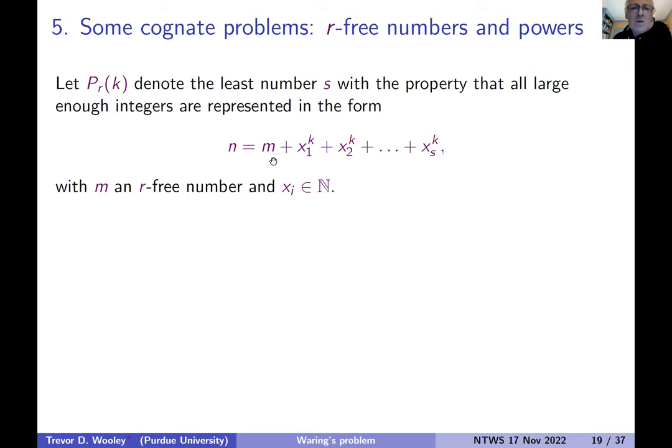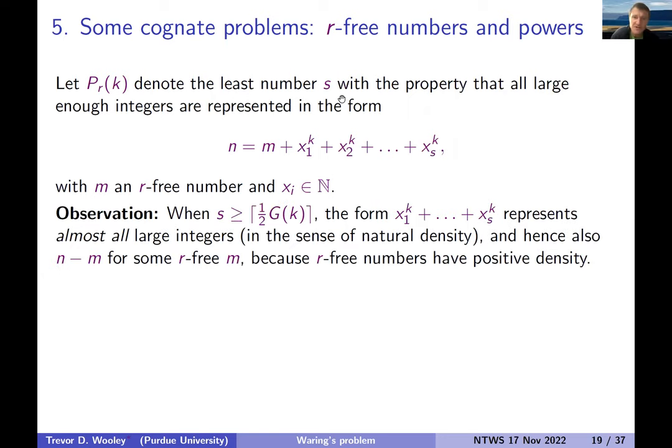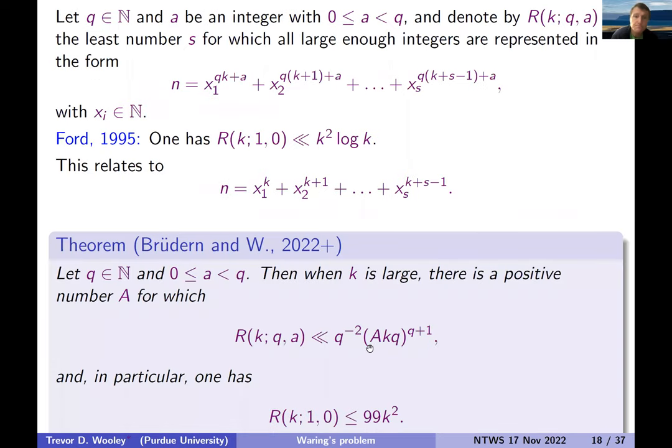Another cognate problem. What if you look at sums of an r-free number and a number of k powers? So maybe the simplest version of this is if you look at a square-free number plus a number of k powers. So square-free numbers have positive density. And so this gives one problems, but one ought to be able to get a pretty good bound.